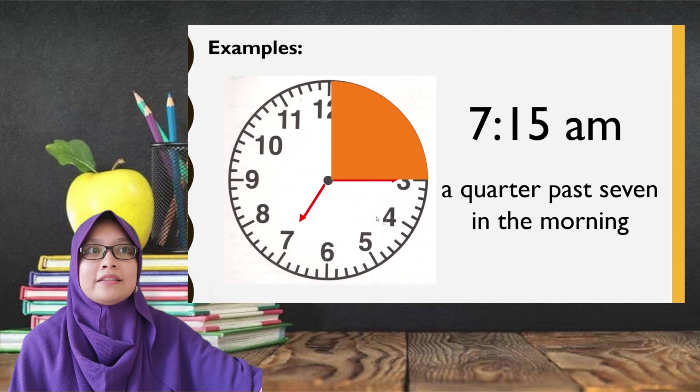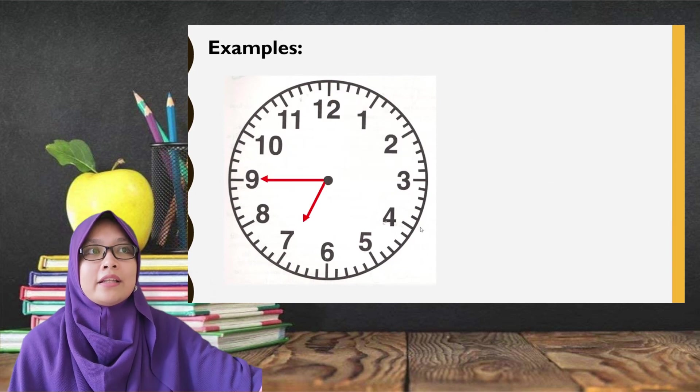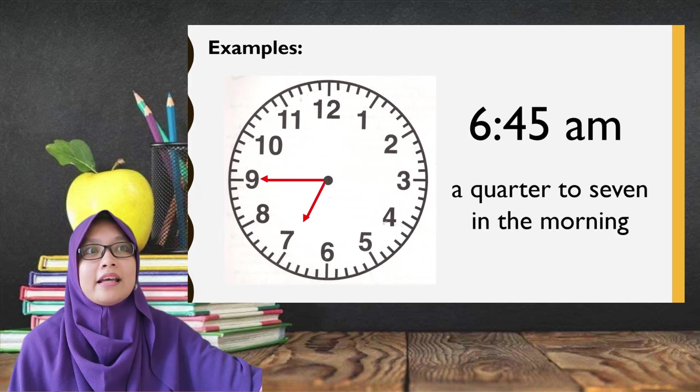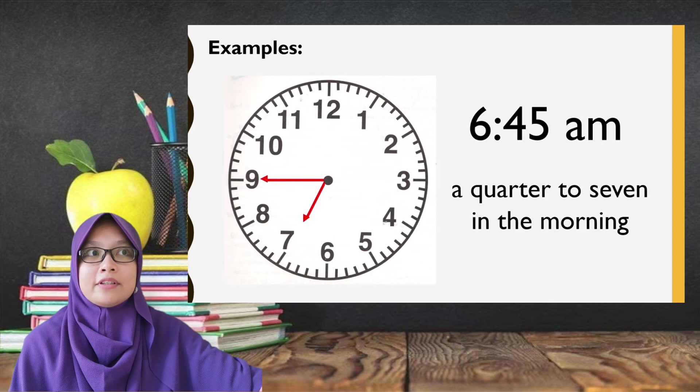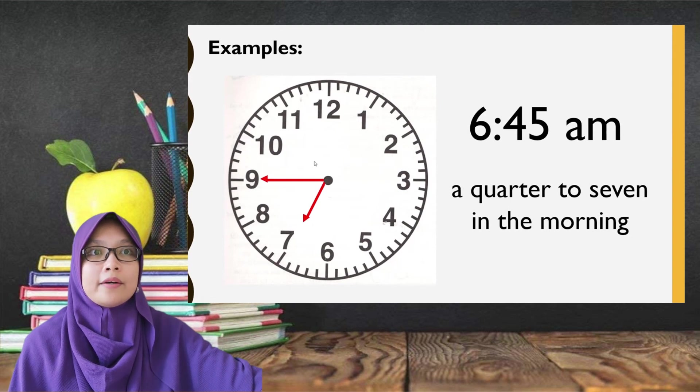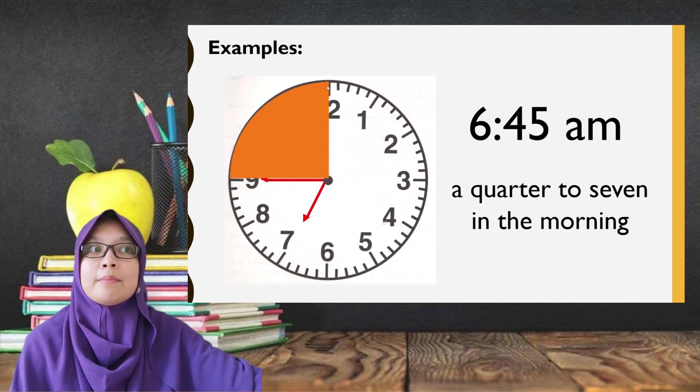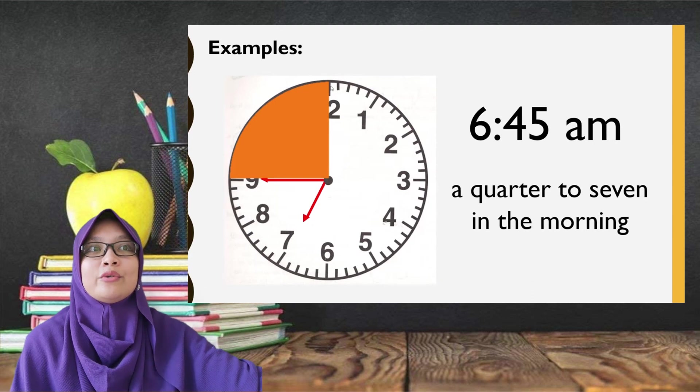Another example is this. It is not stated whether it is a.m. or p.m. So, we can say it as 6.45. How can we tell it in a more formal way? We can say it as a quarter to 7 in the morning. As we can see, there are another 15 minutes to the next hour. Ada lima belas minit lagi untuk kejam seterusnya. That's why we say it as a quarter to 7.